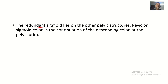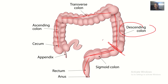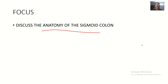The redundant sigmoid colon lies on other pelvic structures. The sigmoid colon is the continuation of the descending colon at the pelvis — meaning it starts at the pelvic brim, also known as the pelvic inlet. So the sigmoid colon is simply a continuation of the descending colon, beginning where the descending colon terminates at the pelvic brim. That's it for the anatomy of the sigmoid colon.